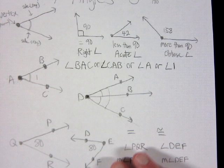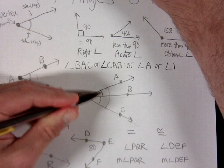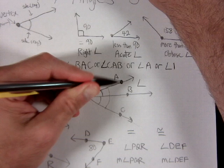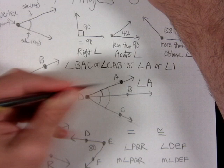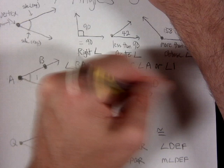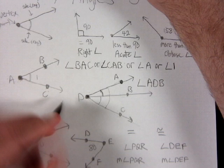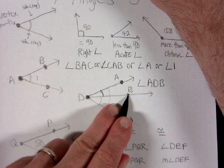To name the top angle, I start with a point on one side — A — then the vertex in the middle — D — then a point on the other ray — B. So this angle is angle ADB.